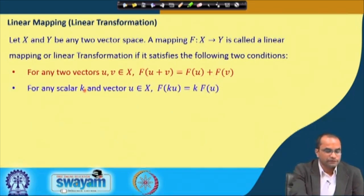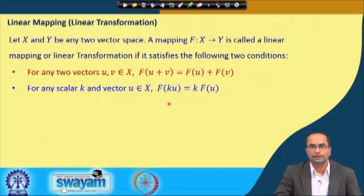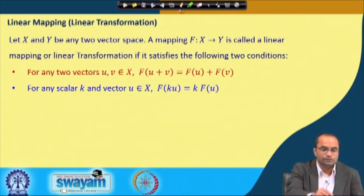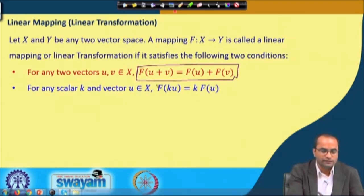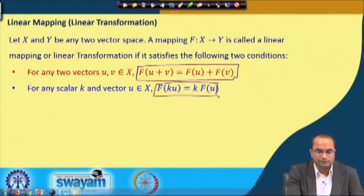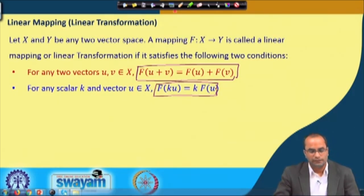The second condition: for any scalar k from the set of real numbers and any vector U from X, F should also satisfy that F of scalar multiplication k times U should be equal to k times F(U). So we have these two conditions required for linearity: F(U+V) must equal F(U)+F(V), and F(kU) must equal k·F(U).